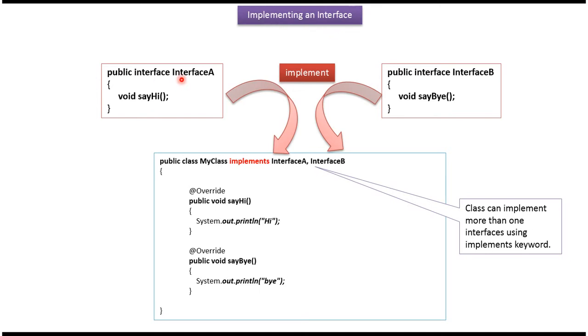Here you can see interface A. It has abstract method sayHi. Here you can see interface B. It has abstract method sayBy.